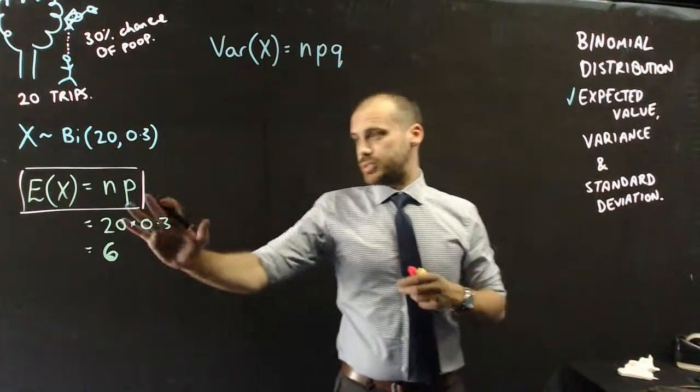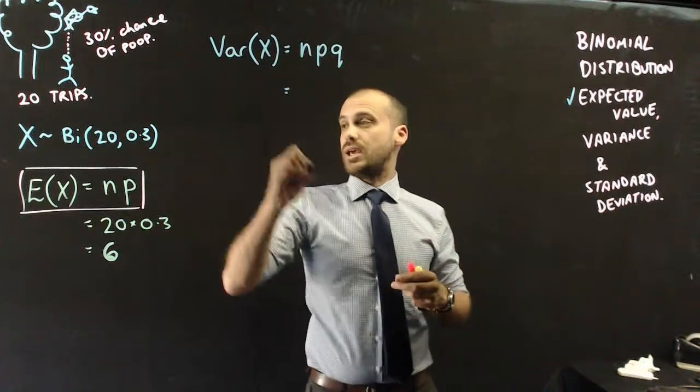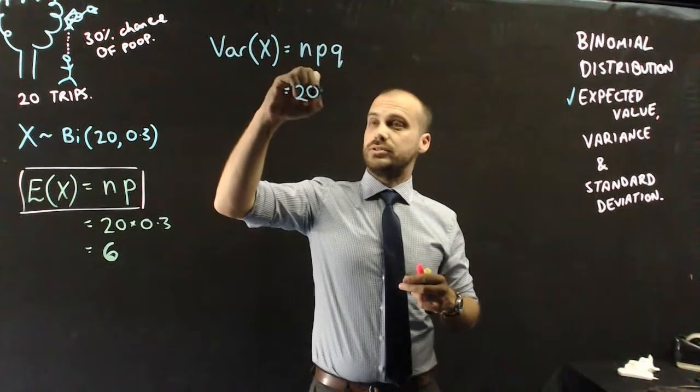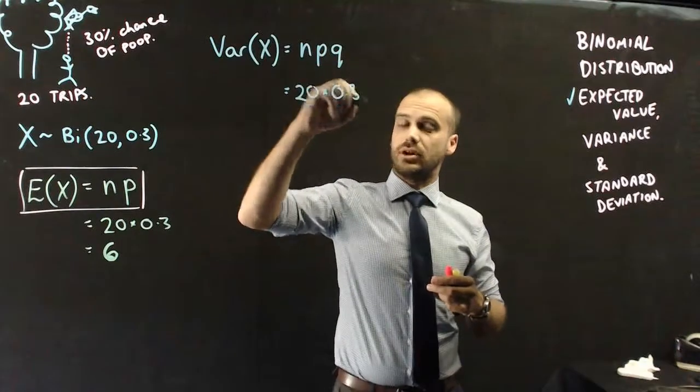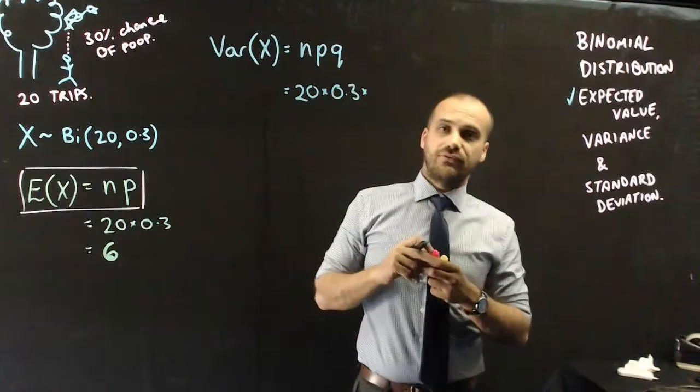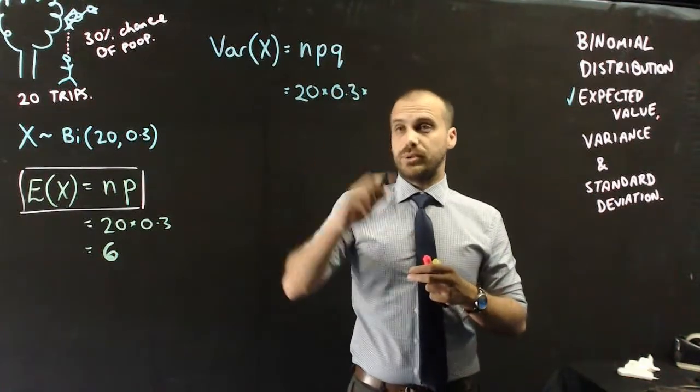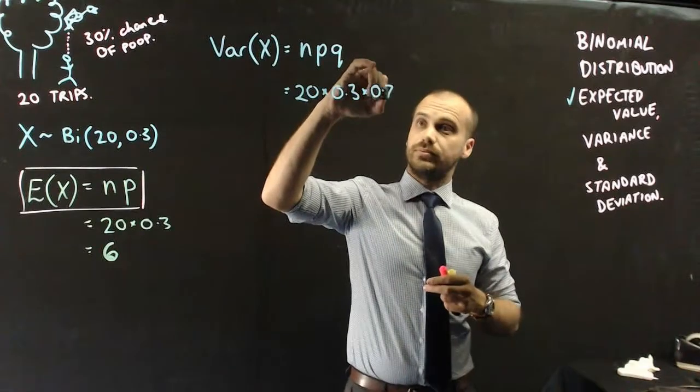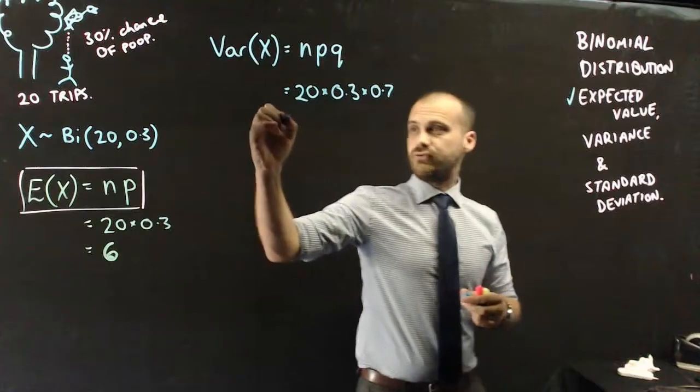So, quite similar to our previous formula, but now we've got three things to take care of. So, N, there were 20 trials. P, number of successes. Oh, sorry, probability of success. And Q, the probability of failure, which, because it's a binomial distribution, is the complement of 0.3, which is 0.7. All right, with that in your calculator, you've got the variance. And our answer there is 4.2.